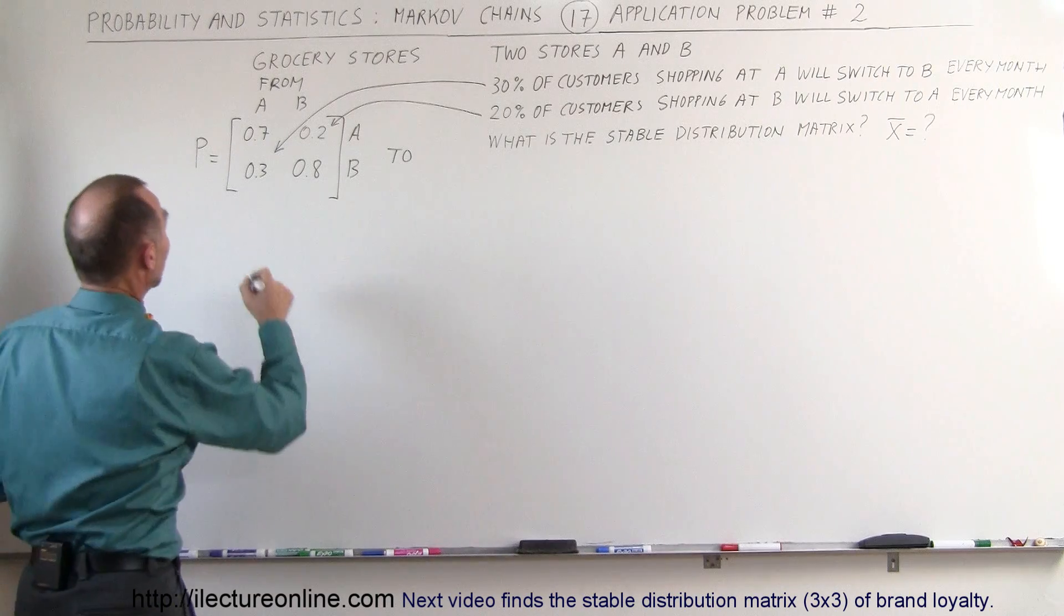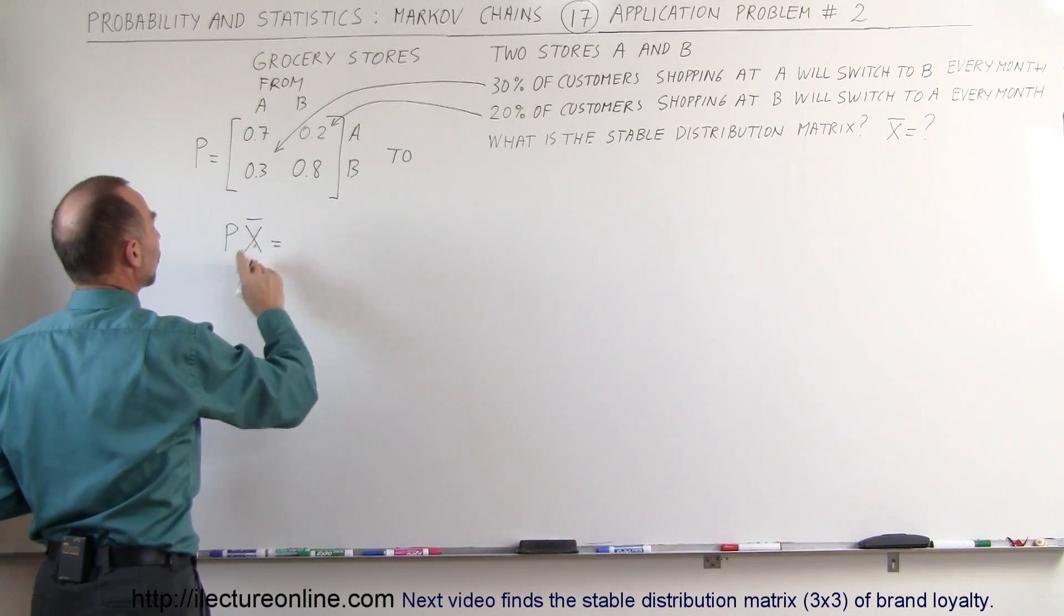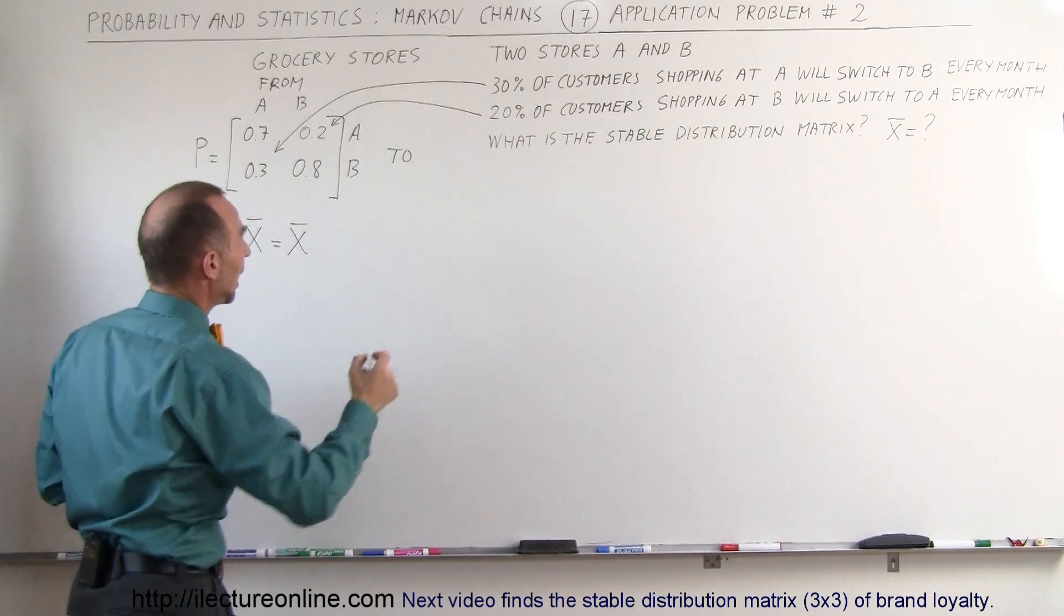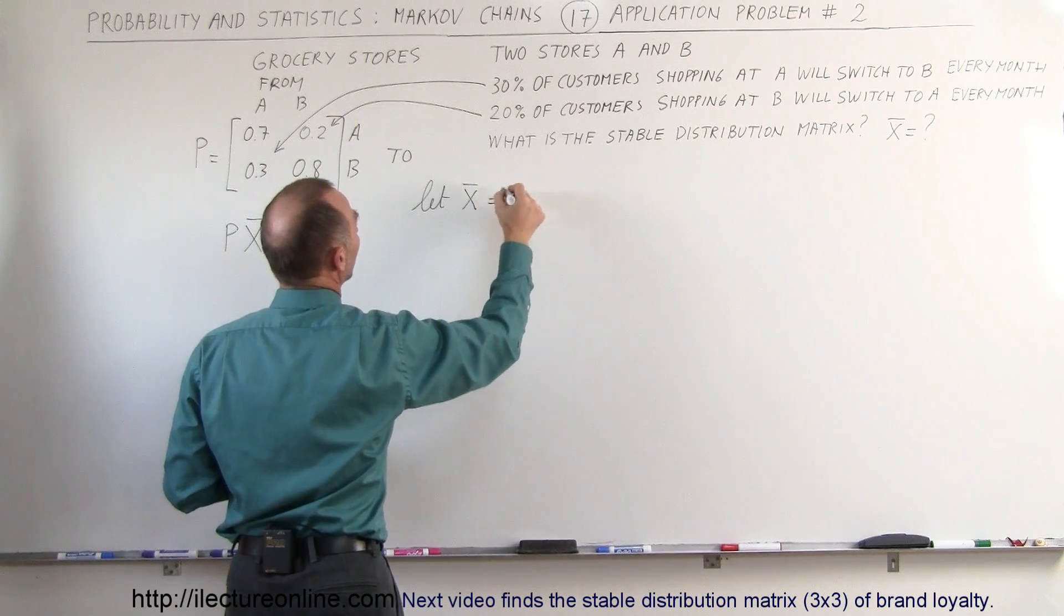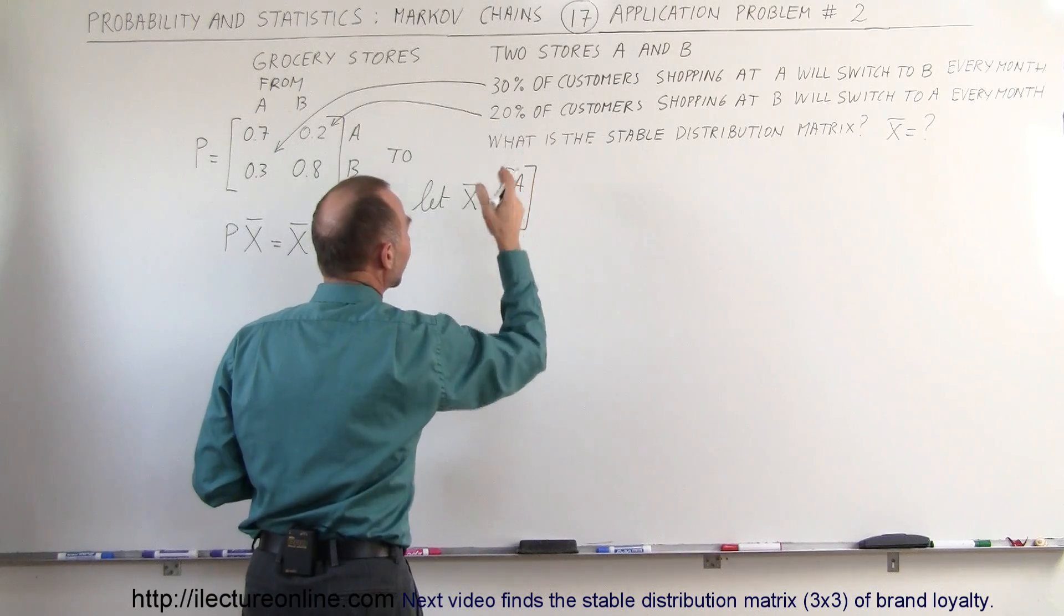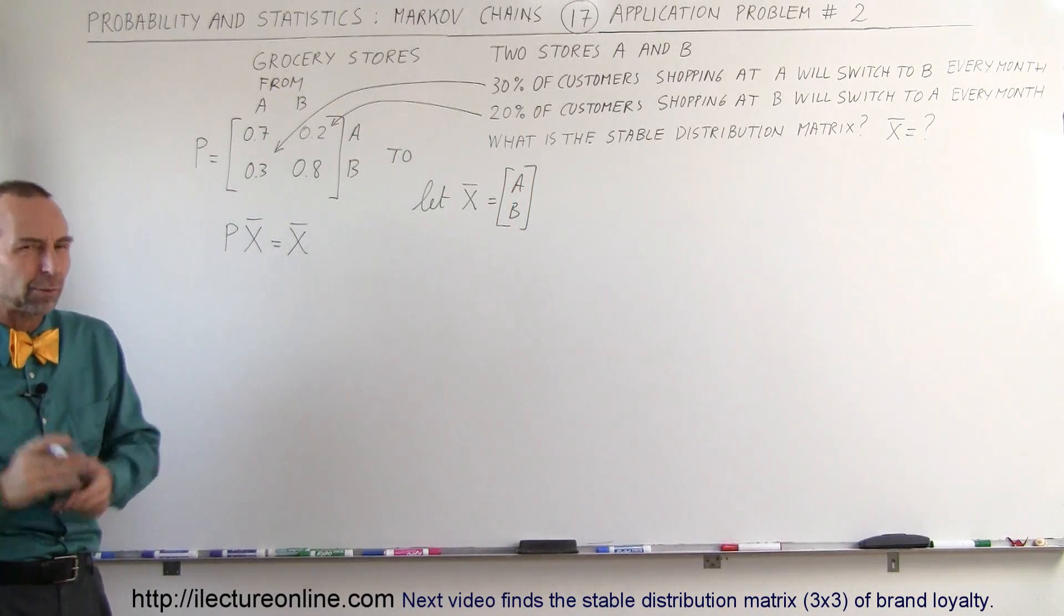In order to do that, we know that P times the stable distribution matrix equals the stable distribution matrix, and we're going to let that matrix equal to A and B. We're finding the final values for the states A and B. That's what we're looking for.